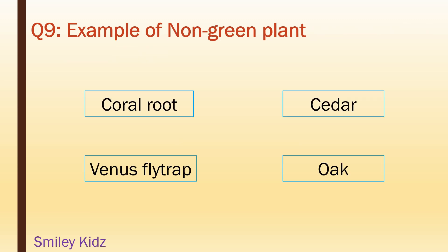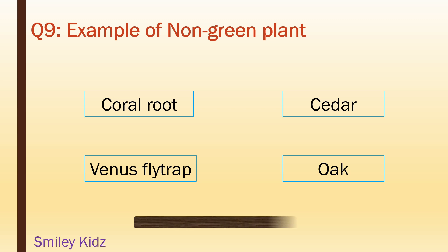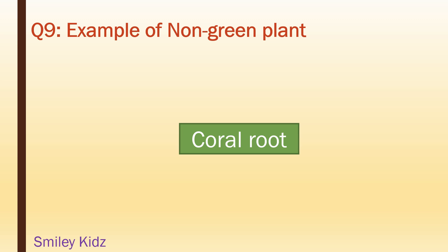Example of a non-green plant: coral root, cedar, venus flytrap, oak. Your time starts now. Your time is up. And the right answer is coral root.